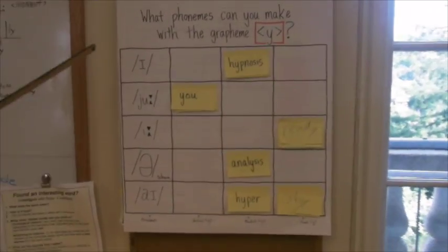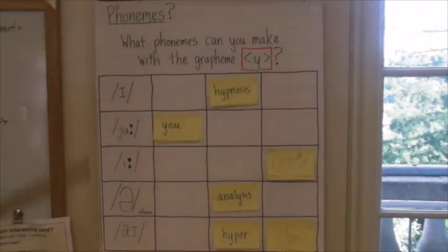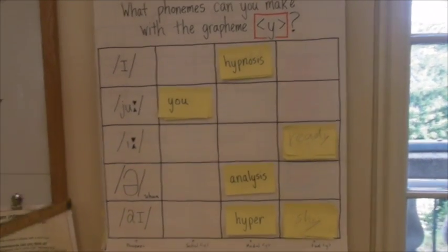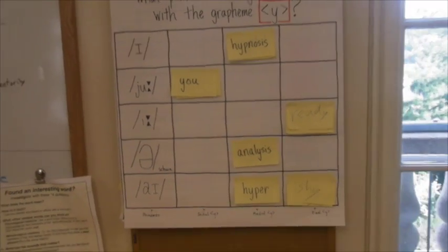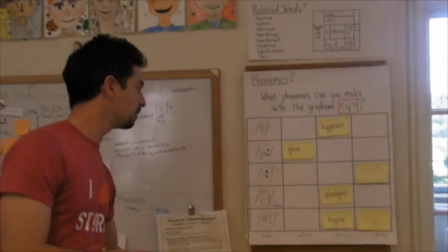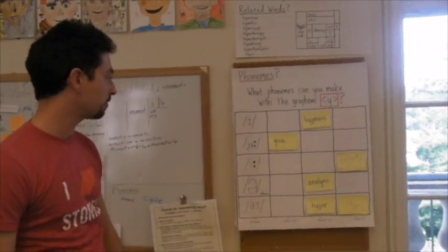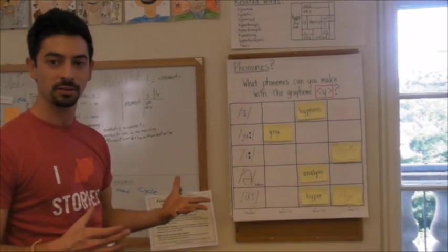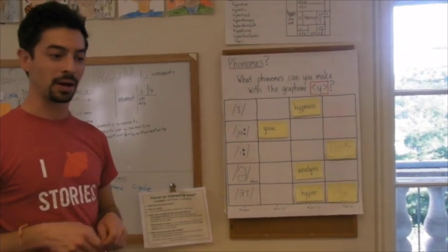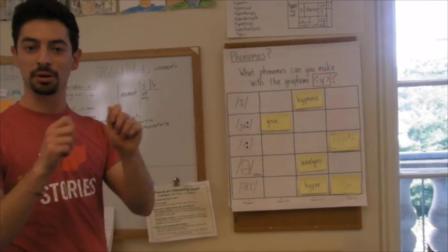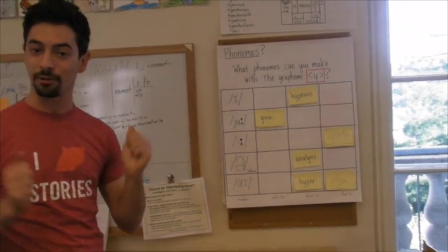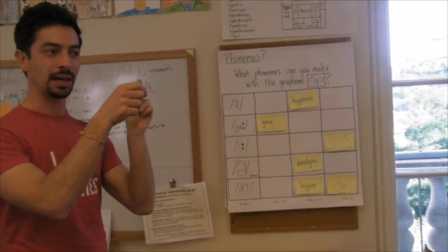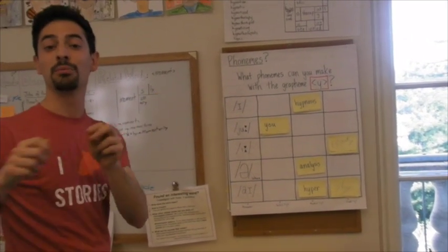So basically this chart was completely blank when we started. There were just four rows and four columns, or five rows and four columns. So you have the phonemes in initial Y, medial Y, final Y. Those were not on there either. And how it works is I have made a handful of these stickies and I hand them out to the kids and then I say, come on up, put it where you think it belongs. And they have no idea what's going on. So someone might just put it in a box and I'm like, great, good guess. And then if it's not correct, I'll move it.